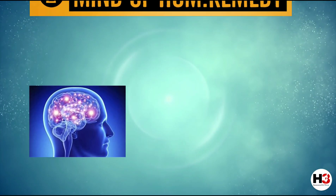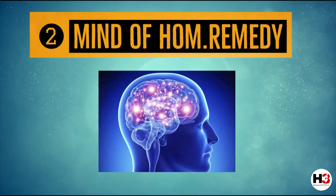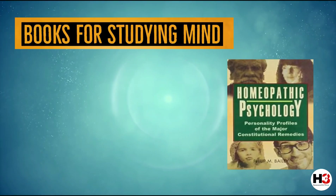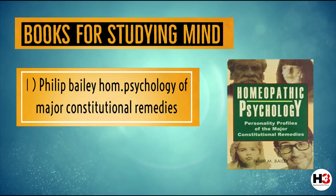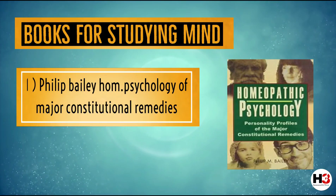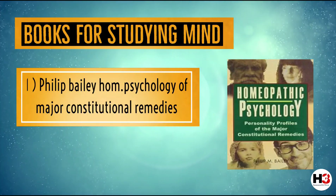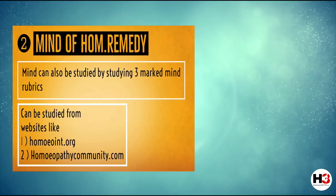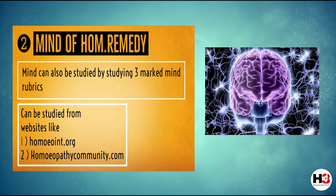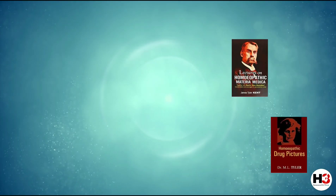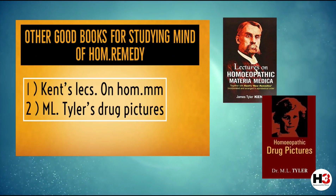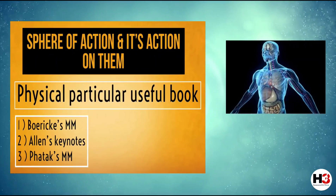The next step is to study the mind of any homeopathic remedy. This aspect is extremely vast and also very interesting. For studying the mind of major constitutional remedies, Dr. Philip Bailey's Homeopathic Psychology of the Major Constitutional Types is an extremely good book covering diverse aspects of the major constitutional personalities. Apart from this, the mind can also be studied by understanding the important three-mark or single-remedy rubrics of mind from various repertories. Websites like homeo-int.org or homeopathycommunity.com can prove really useful. Other good books for studying the mind are Kent's Lectures on Homeopathic Materia Medica or Dr. M.L. Tyler's Drug Pictures.